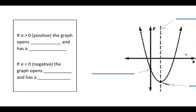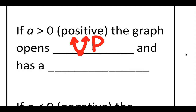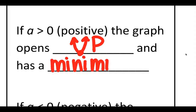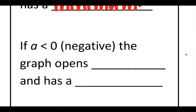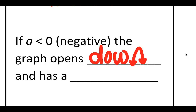Review from what we've been doing: if a is greater than 0 — a.k.a. a is positive — that means your graph is going to be opening upward, and that means it has a minimum because our vertex is at the lowest point. If a is negative, a.k.a. it's less than 0, the graph is going to open downward, and that means our vertex is now at the highest point, so this graph is going to have a maximum.